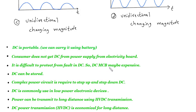So DC MCB may be expensive. DC can be stored. Complex power circuit is required to step up and step down DC.